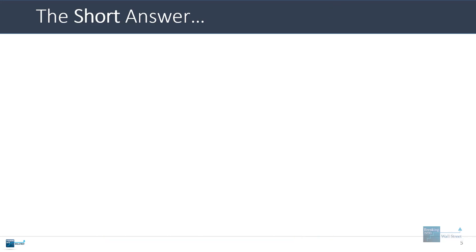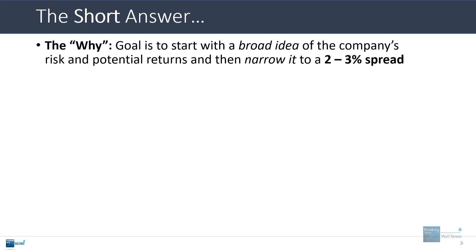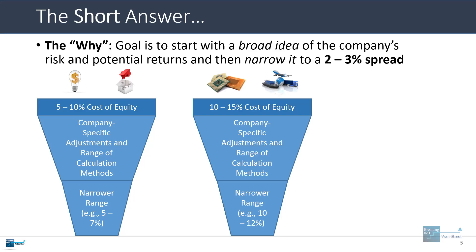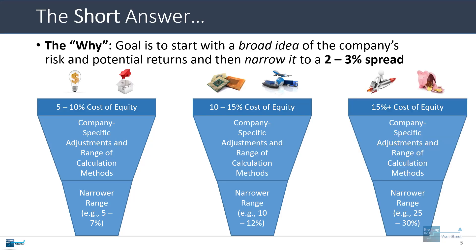One thing that often gets overlooked with the cost of equity is that people don't really understand why they're doing it. The way I think of it is that you want to start with a broad idea of the company's risk and potential returns and then narrow it down to a much lower spread. I tend to put companies in three buckets: 5% to 10%, 10% to 15%, and 15% plus cost of equity ranges.